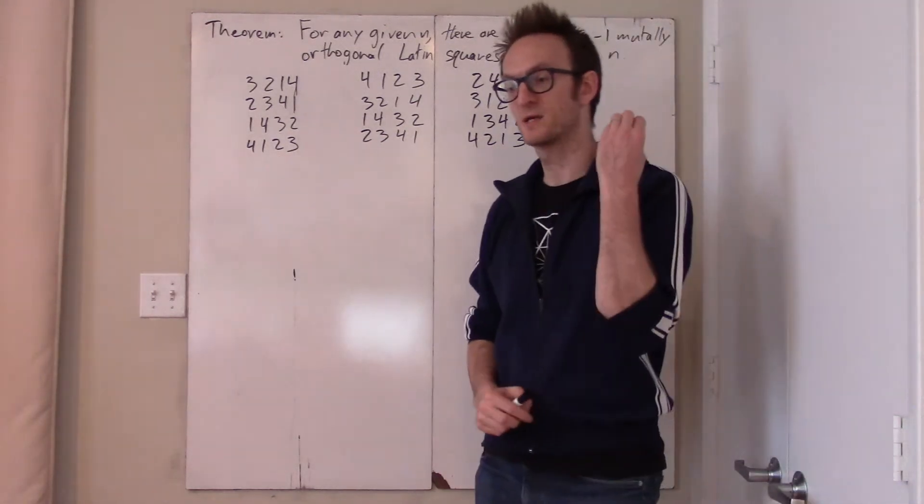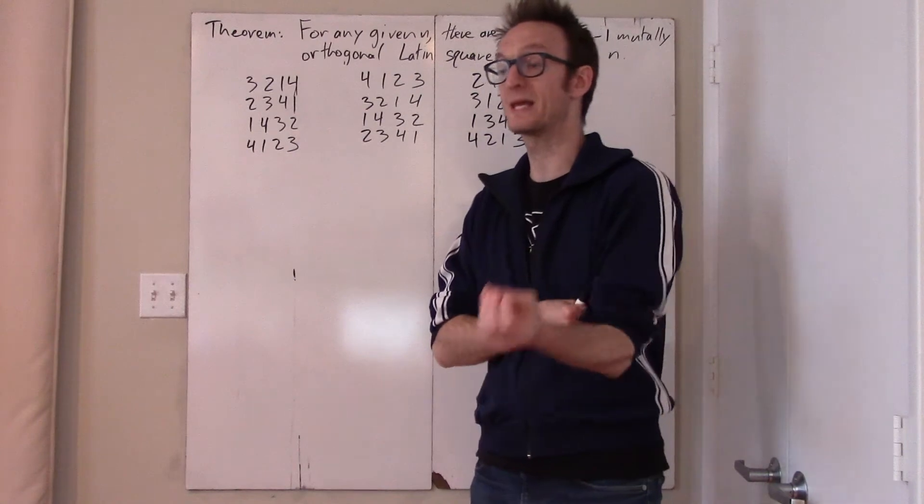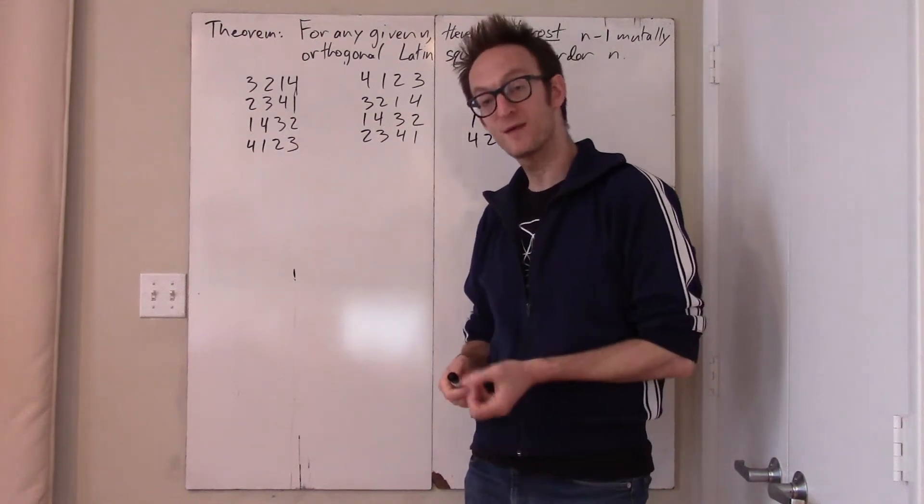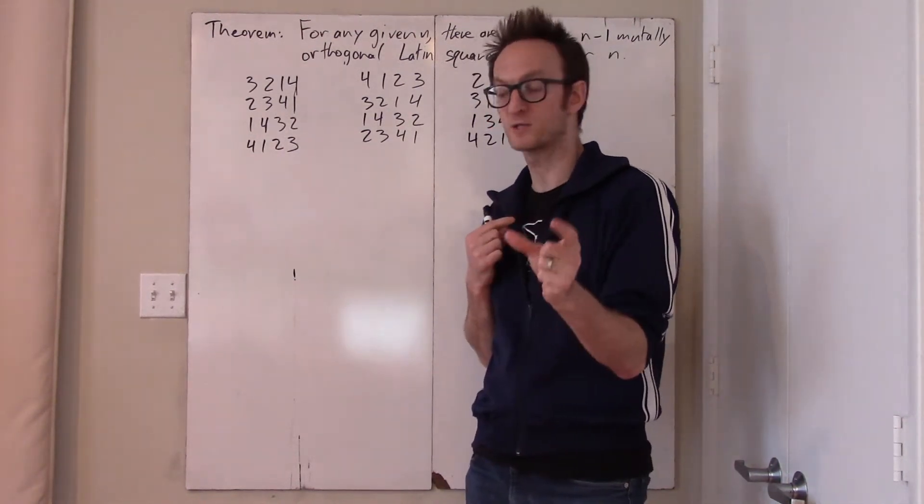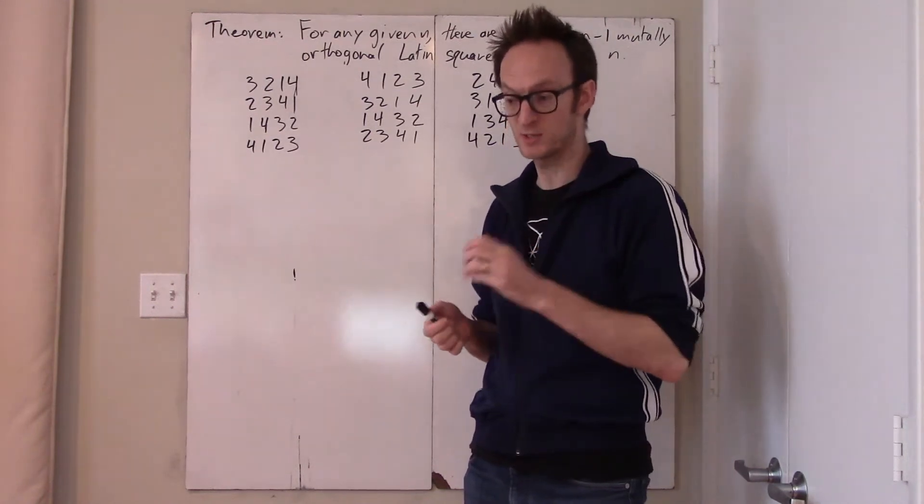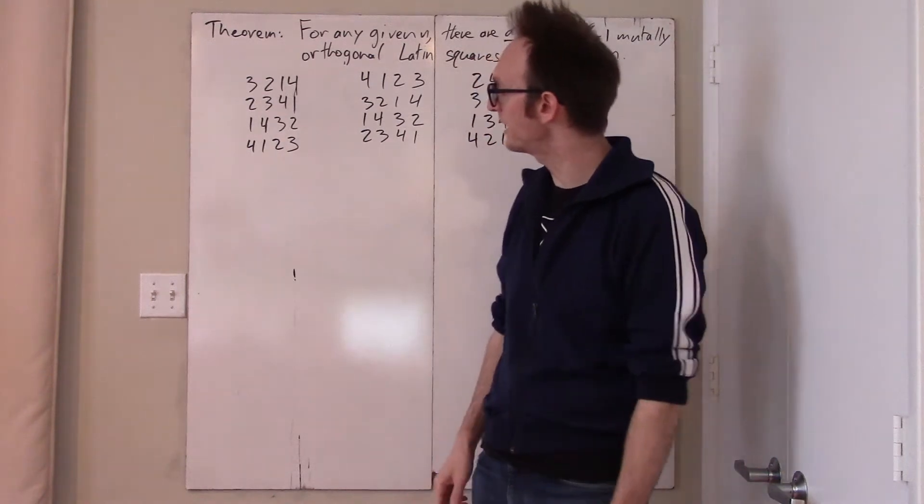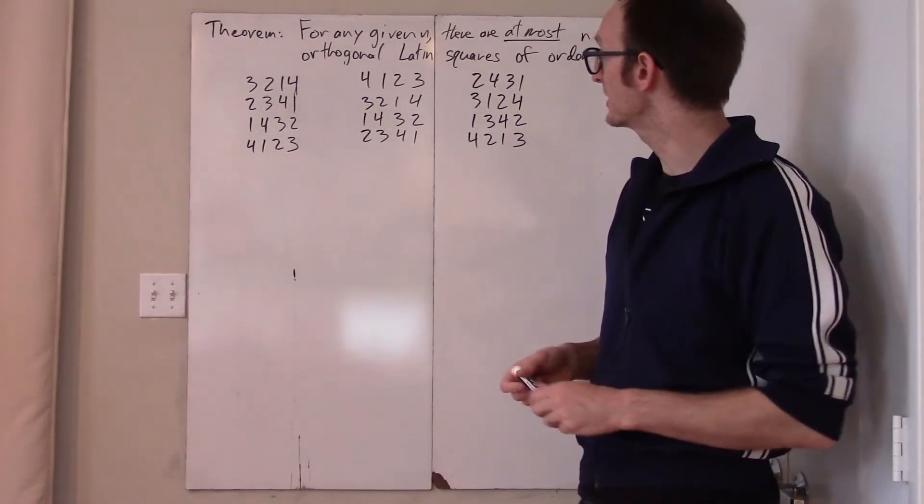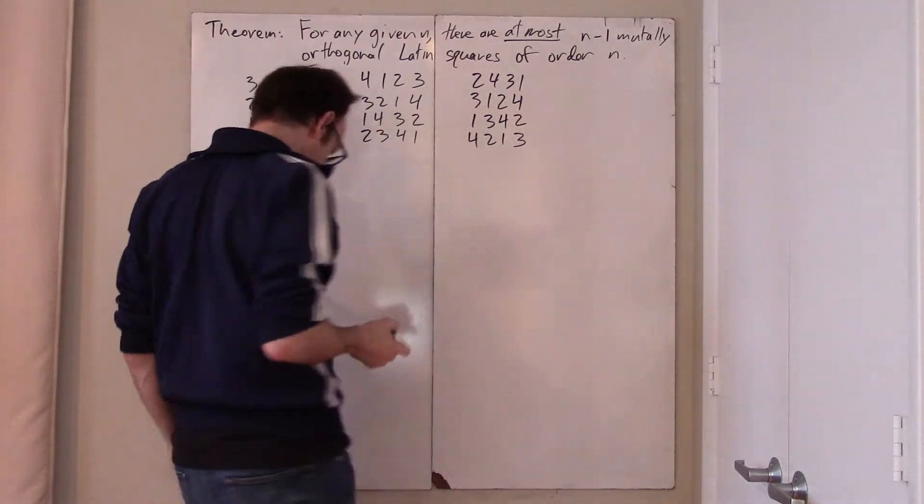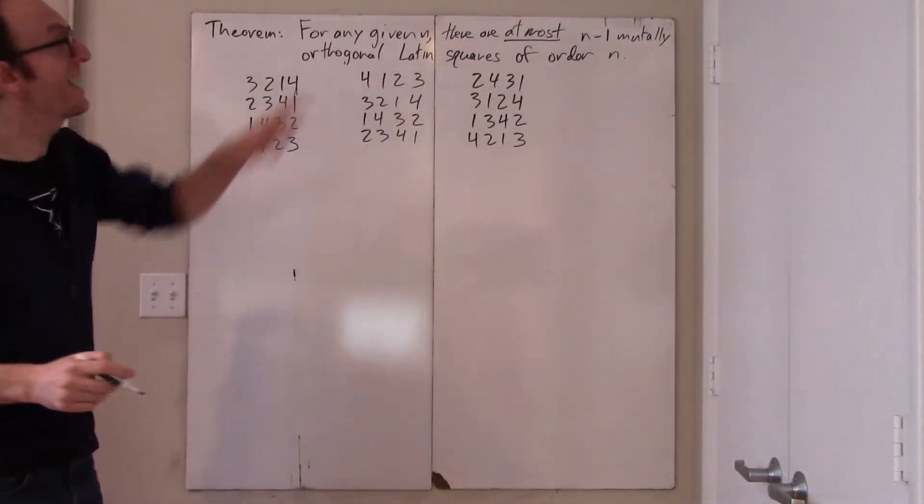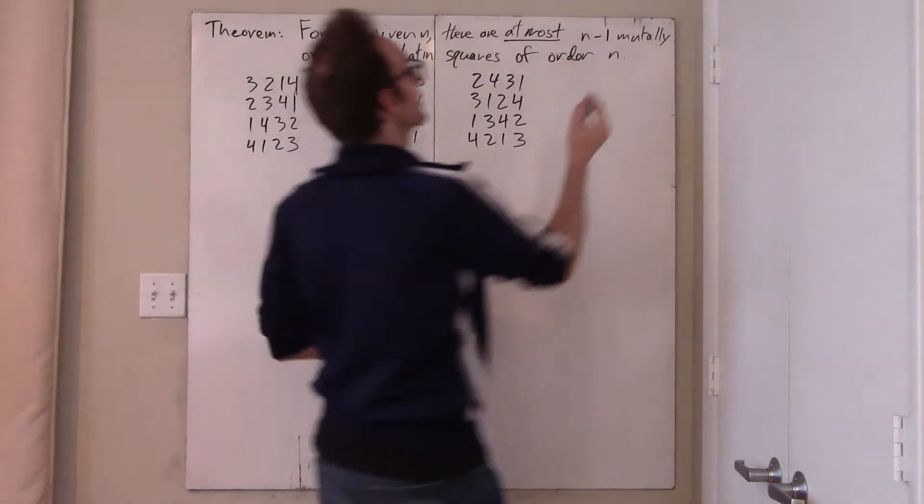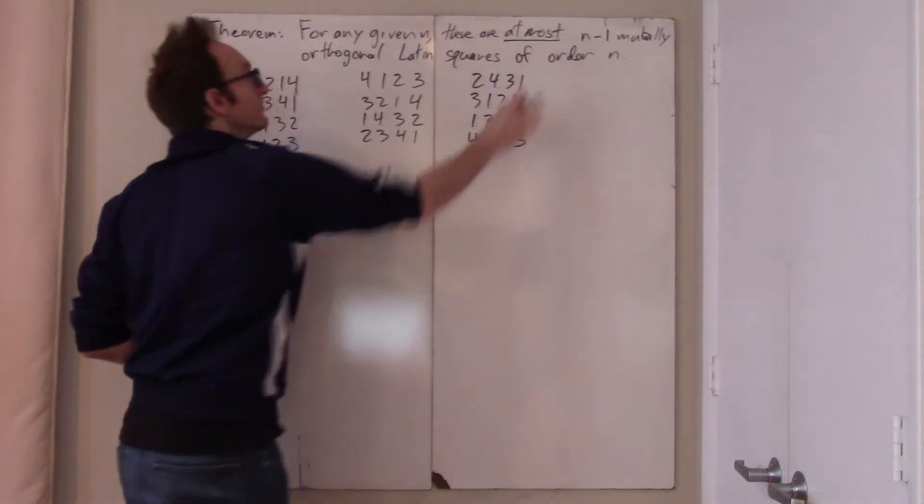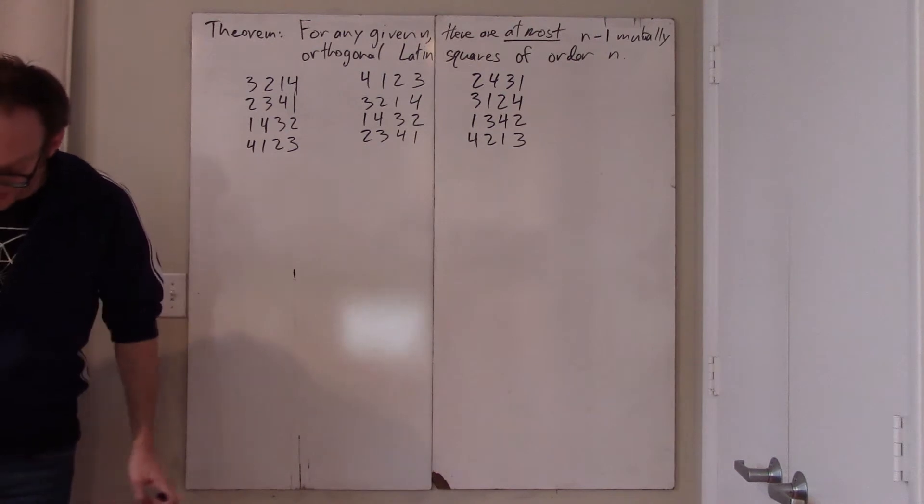Here we go. We have seen that for n equals 2, we cannot find a pair of mutually orthogonal Latin squares of order 2. We found for n equals 3 that we can find a pair of mutually orthogonal Latin squares. For n equals 4, we have found a set of 3 mutually orthogonal Latin squares. And the question is, does this generalize to n minus 1? Can we always find n minus 1 mutually orthogonal Latin squares of order n? And the answer is no. But n minus 1 is the best we can hope for.